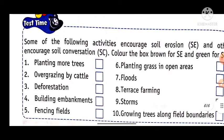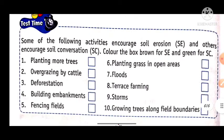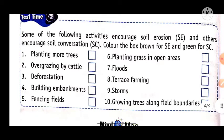Here we have an activity. Some of the following activities cause soil erosion and others represent soil conservation. Color the box brown for soil erosion and green for soil conservation. For example, planting more trees — this is soil conservation, so you will fill in the green color.